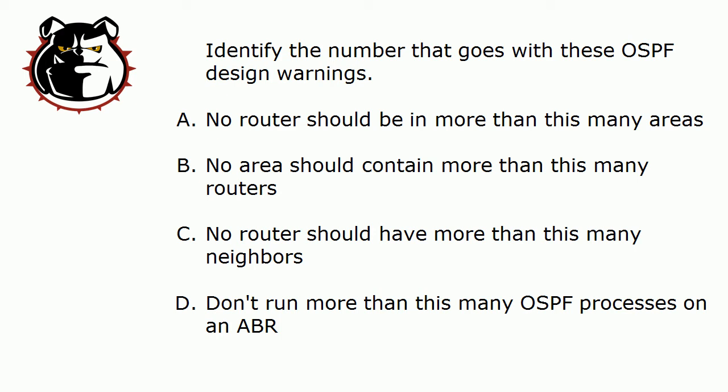So just give me the number that goes with these Cisco OSPF design warnings or best practices. A: No router should be in more than this many areas. B: No area should contain more than this many routers. C: No router should have more than this many neighbors. And D: Don't run more than this many OSPF processes on an ABR.